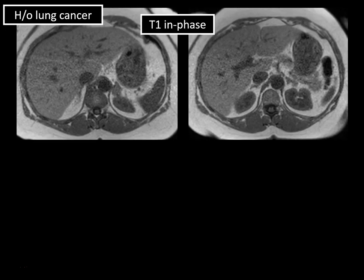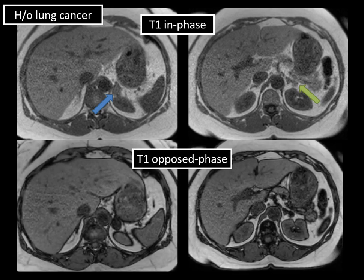This patient also had a history of lung cancer. Looking at T1 in-phase MRI images through the adrenal glands, there's a left adrenal nodule superiorly and another more inferolaterally on the left. On the T1 opposed-phase MRI images — identifiable by the India-ink or etching artifacts surrounding organs at the fat interface — the larger of the two nodules demonstrates signal dropout, becoming dark, as does the smaller one arising from the lateral limb of the adrenal gland. These are both diagnostic of lipid-rich adrenal adenomas.